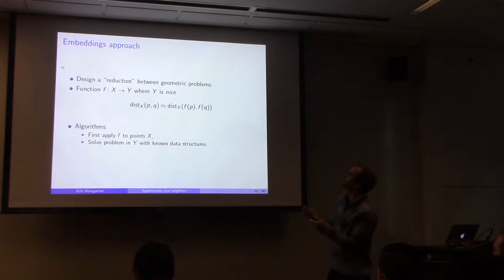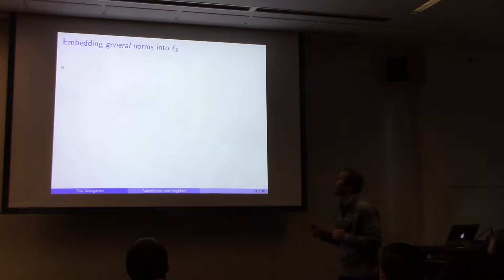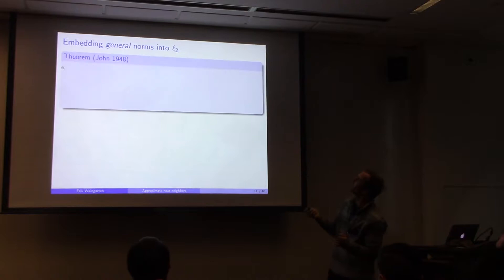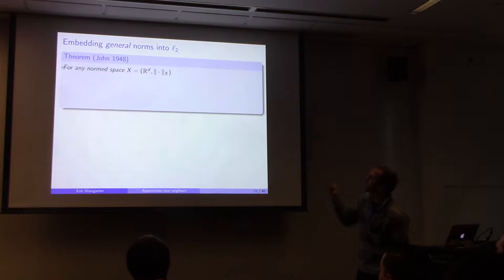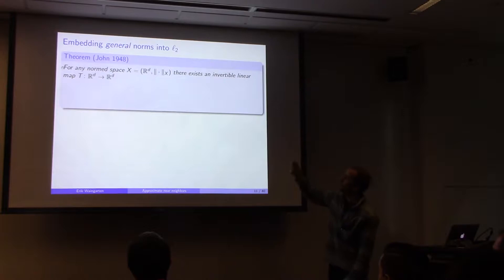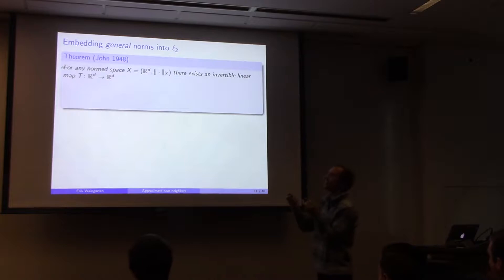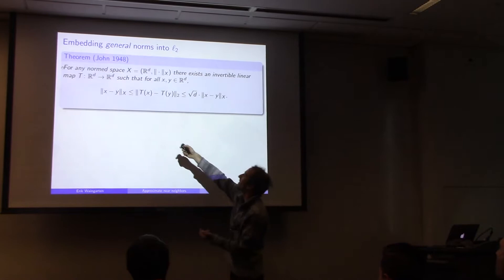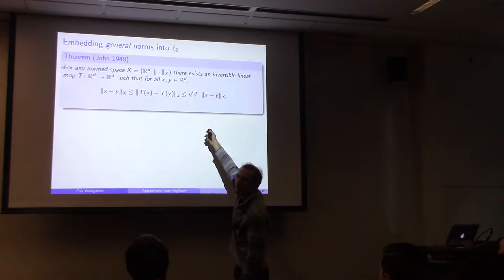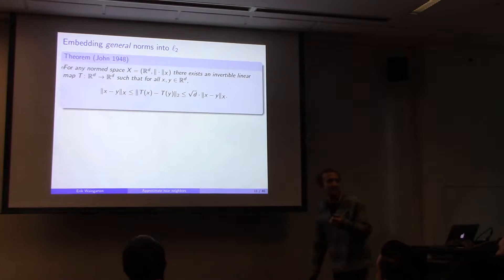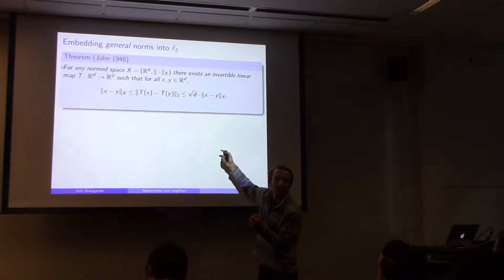To see how far embeddings take us for general norms: already in 1948, Fritz John proved that for any norm space X over R^d, there exists an invertible linear map such that the distance between any two points in X is preserved up to a factor of sqrt(d) as the L2 distance after applying the map. Equivalently, for any origin-symmetric convex body K, there's an ellipsoid contained within the body where sqrt(d) times the ellipsoid contains the body.